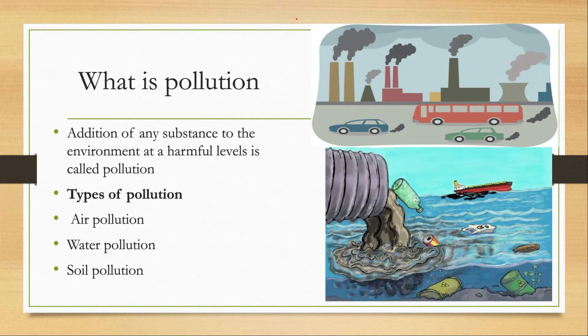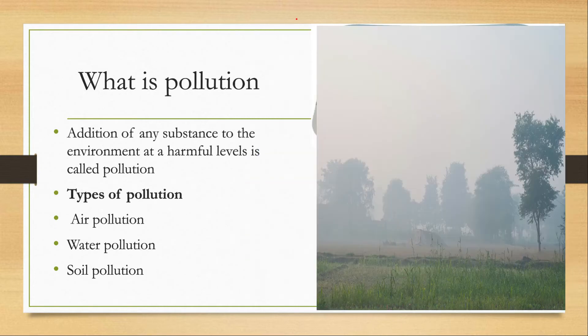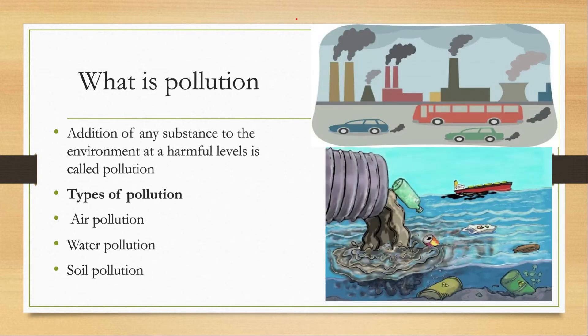Air pollution is a mixture of solid particles and gases in the air. Air pollution is caused by car emissions, chemicals from factories, dust, pollen, and smog, which adversely affect human health, causing diseases of the heart, lungs, and other health problems. Smoke also inhibits plant growth.